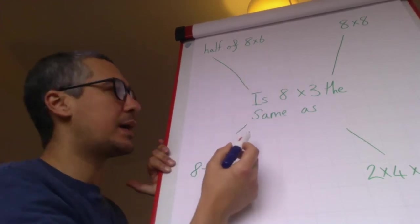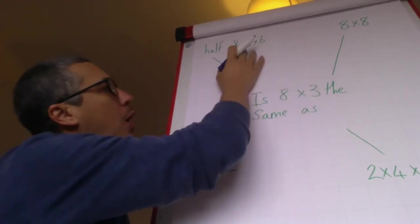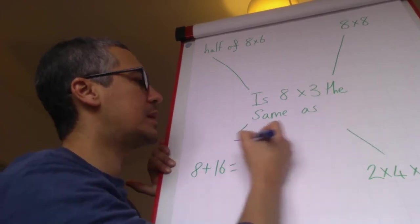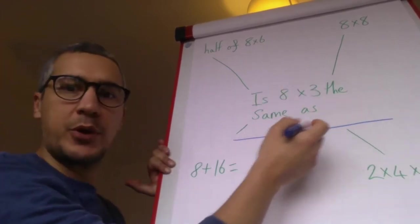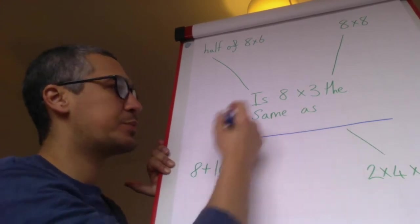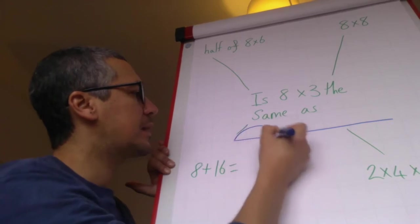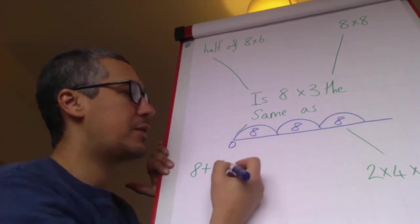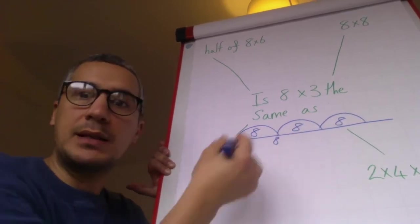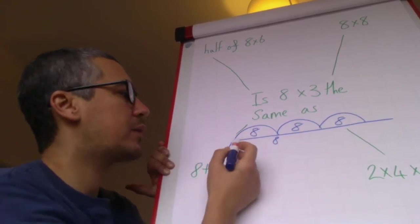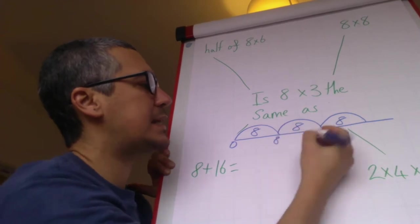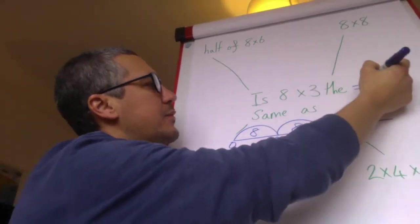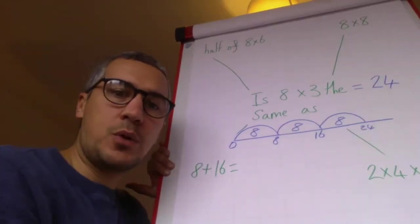What we need to do is work out what eight times three is and what half of eight times six is. Eight times three—if I do a number line, I've got eight jumps of three or three jumps of eight. Because of the size of my board, I'm going to do three jumps of eight. I know my first jump must be eight. I can skip count in twos or fours to get the rest. Eight add eight is 16, and then add another eight equals 24. So eight times three equals 24.